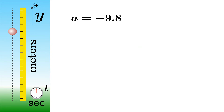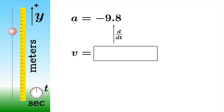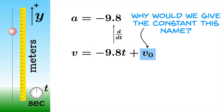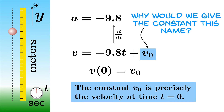If we know the acceleration is negative 9.8, what could the velocity possibly be? We need a function whose derivative is the constant negative 9.8. That's going to be negative 9.8t. But we can also add a constant, because the derivative of a constant is zero. We'll call it v₀, or v naught. When we plug zero into this formula for t, the only thing that survives is the constant v₀ — so v₀ is precisely the velocity at time t = 0. We give it this suggestive name to indicate it's the velocity at time zero.